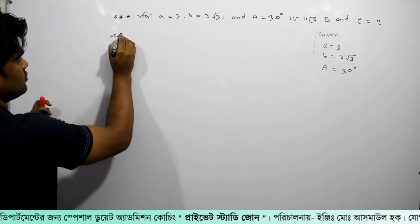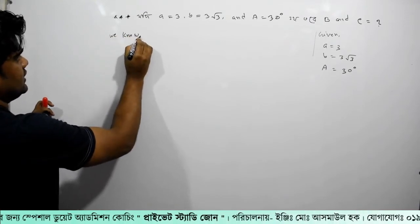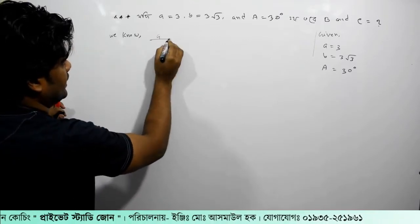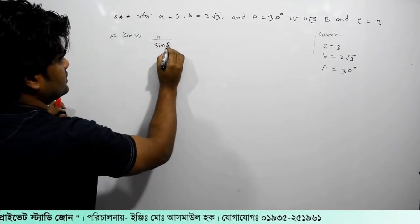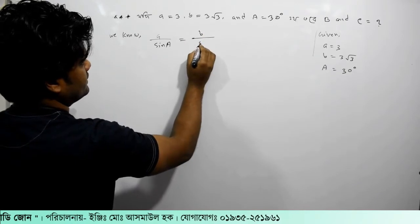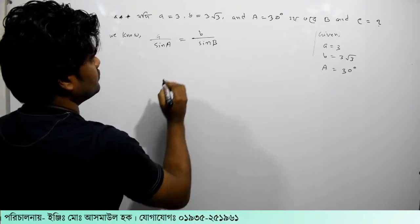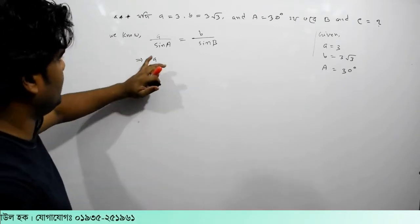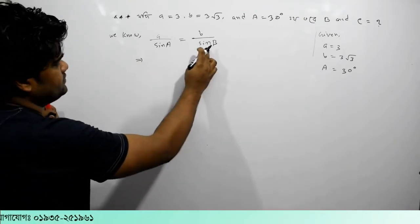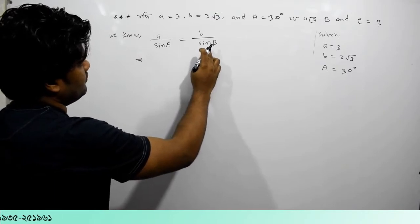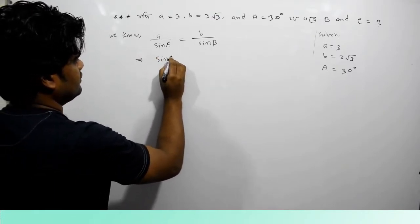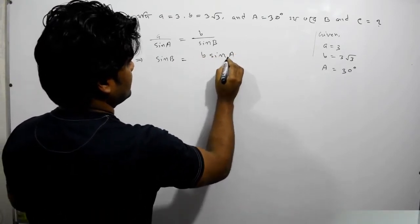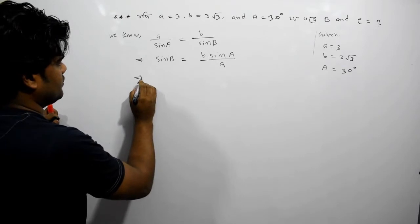Here we are going to write the Law of Sines: a divided by sin A equals b divided by sin B. So here we are going to write a calculation using this formula.